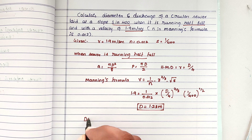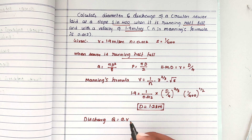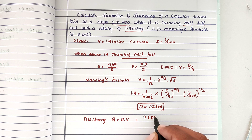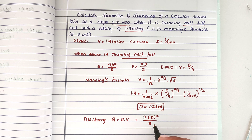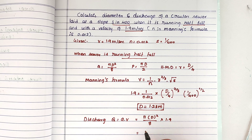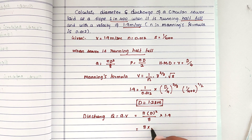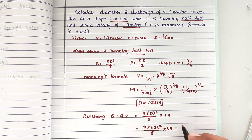Next, we find the discharge. Discharge Q = A × v = (πd²/8) × v. Substituting the values: Q = (π × 1.23²/8) × 1.9. Solving this, we get Q = 1.13 m³/s. This is the discharge of the sewer.